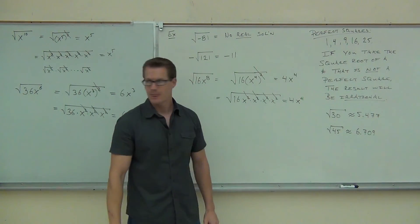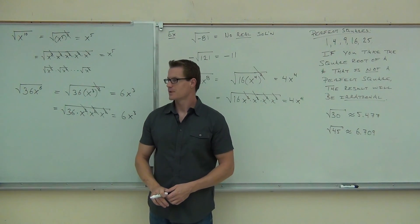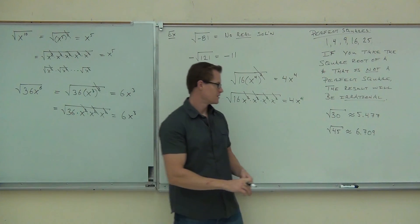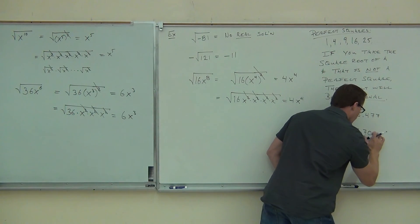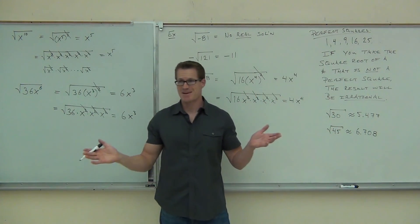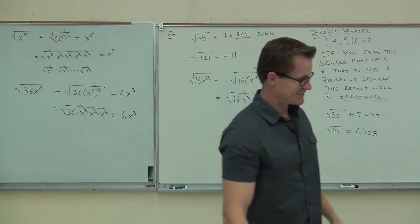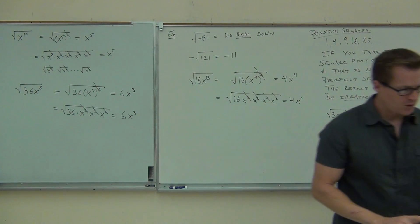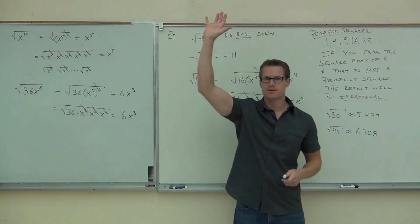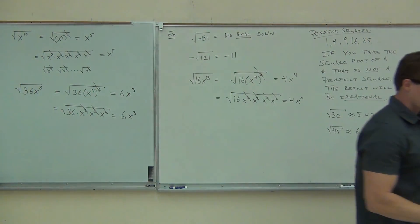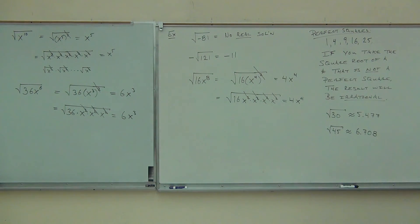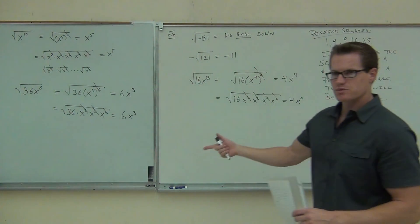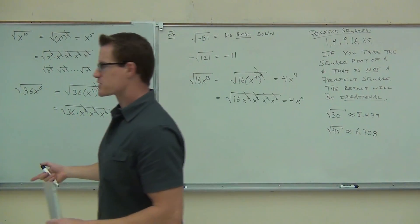That squiggly equals sign means it's not exact — we're approximating. How many of you feel okay finding this on your calculator? Good deal. We've covered square roots. You should be able to find the square root of any number at this point.